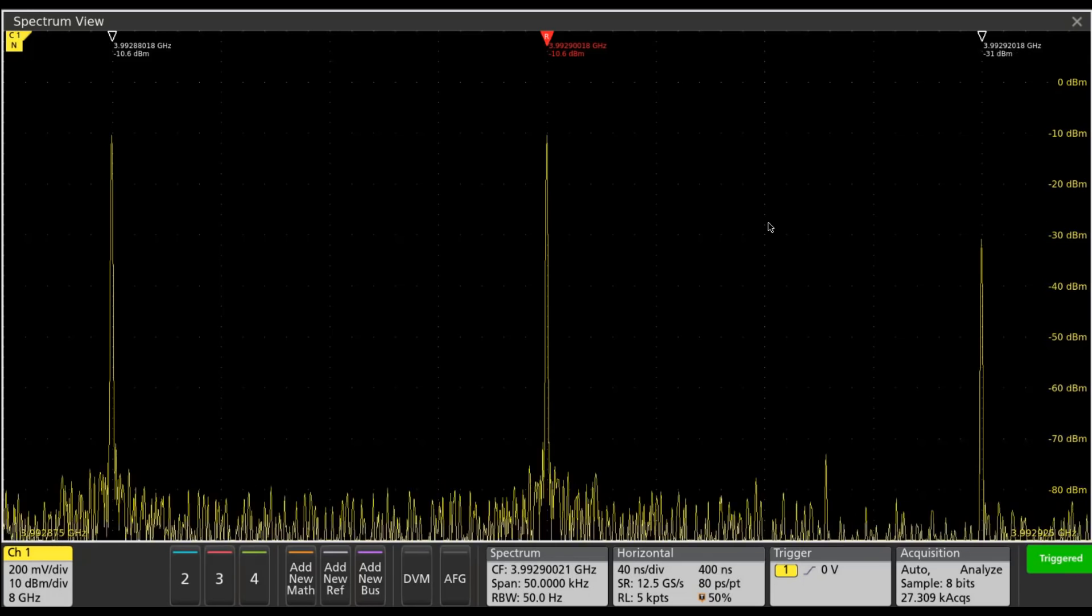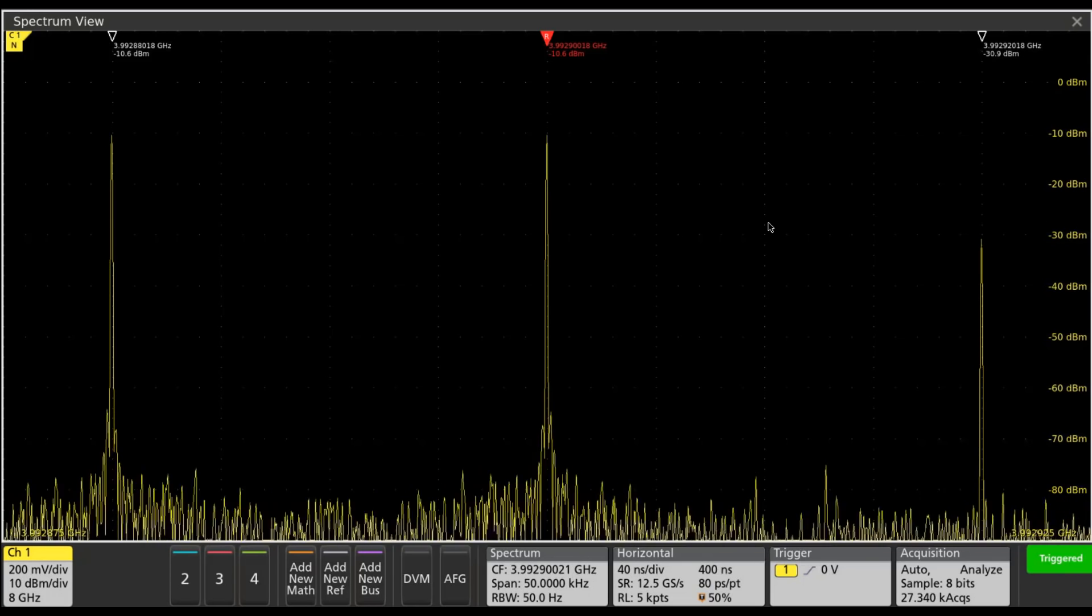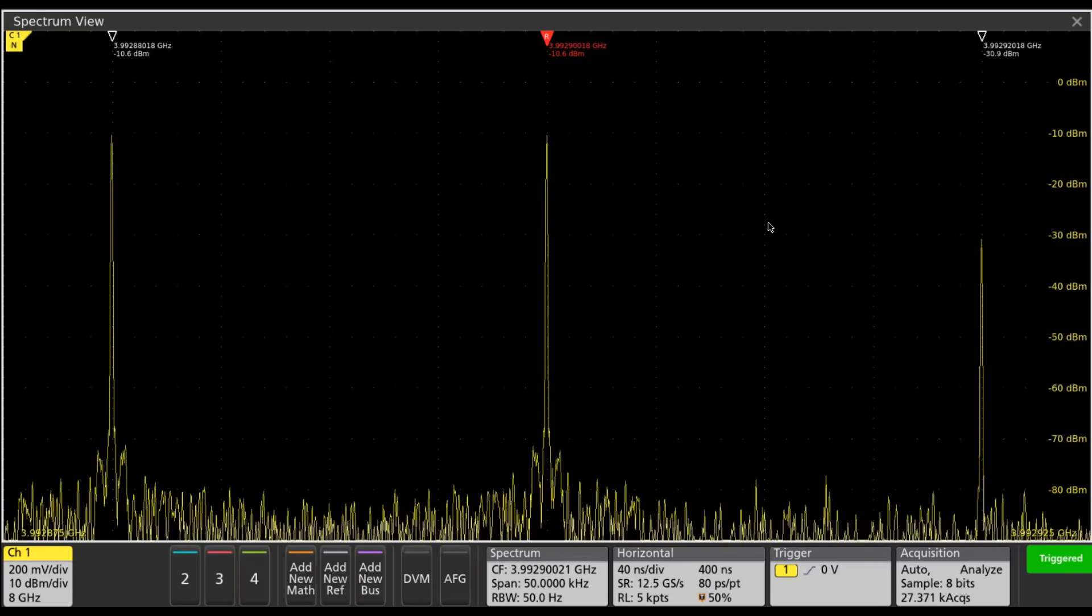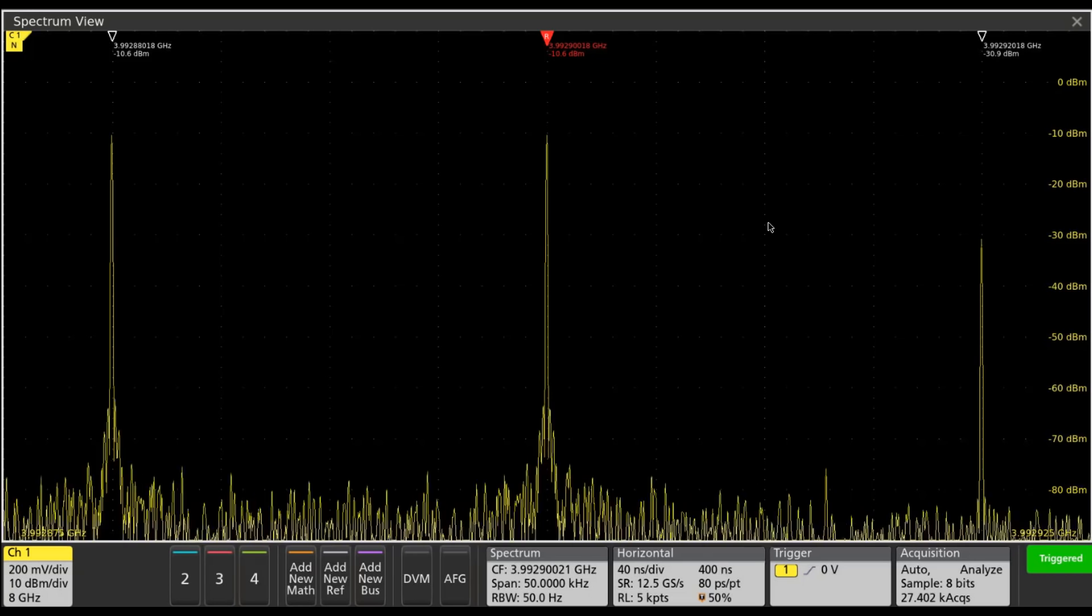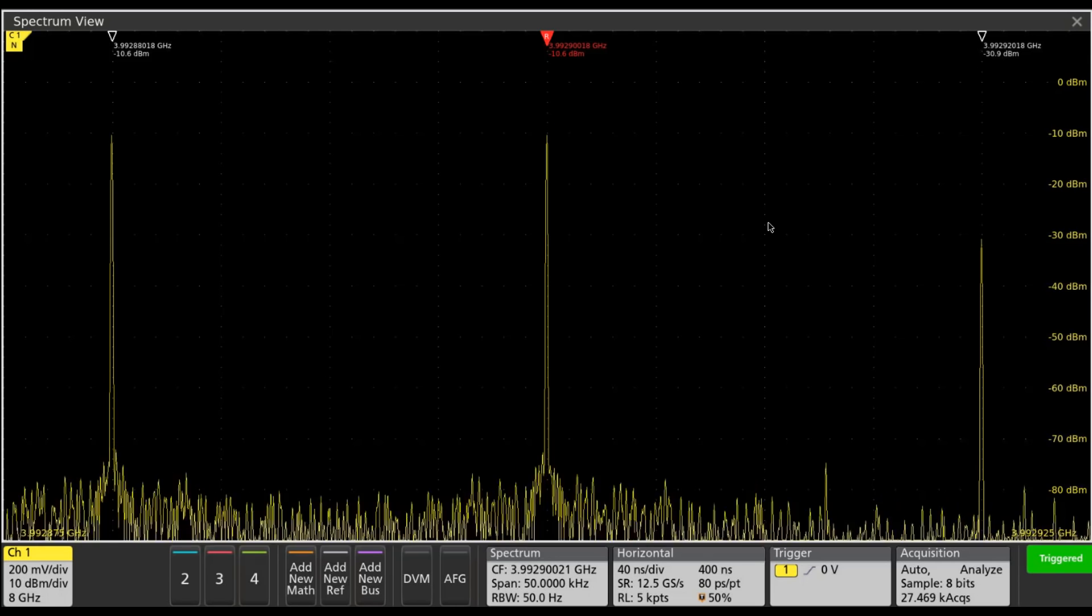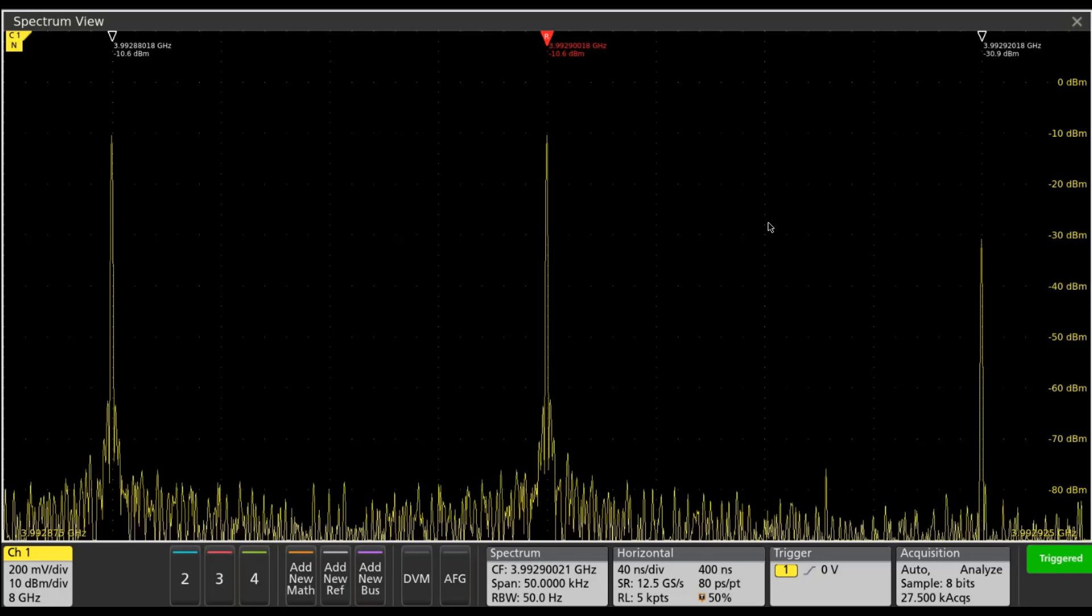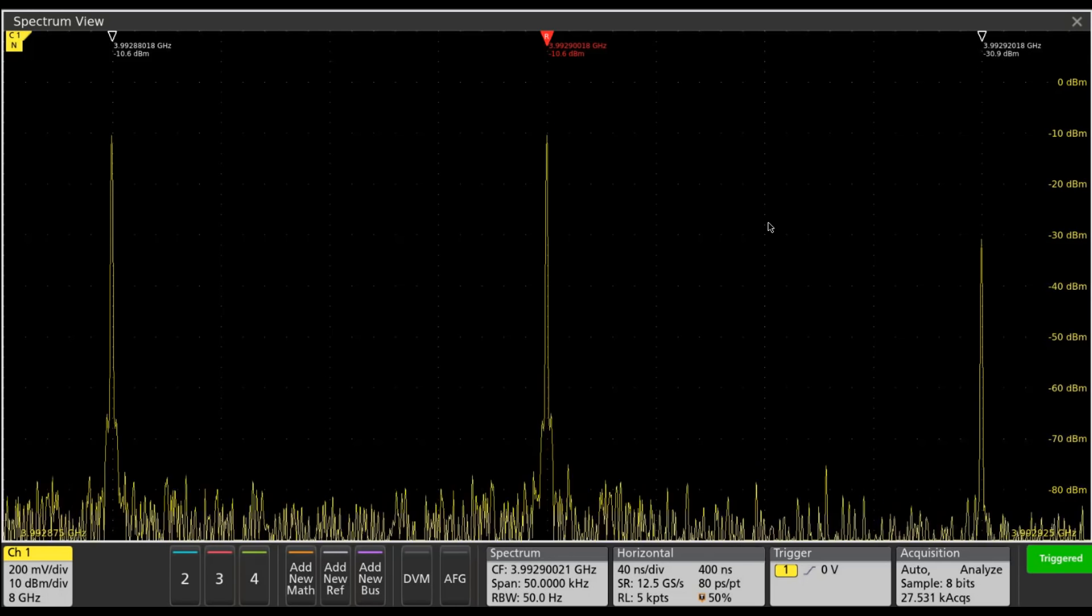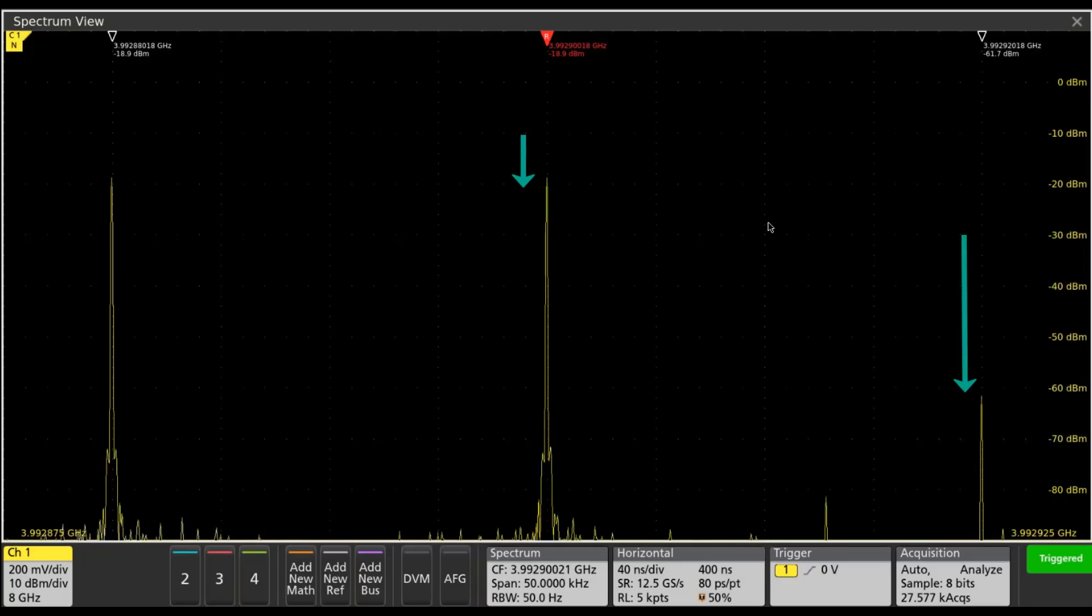The theory tells us that if we drop the input signal level by a certain amount, the third-order intermodulation distortion product should drop by three times that amount, and we can see that here. If I put in approximately 10 dB of attenuation, the main tone amplitudes drop by 10 dB, but that third-order intermodulation distortion product dropped by 30 dB.